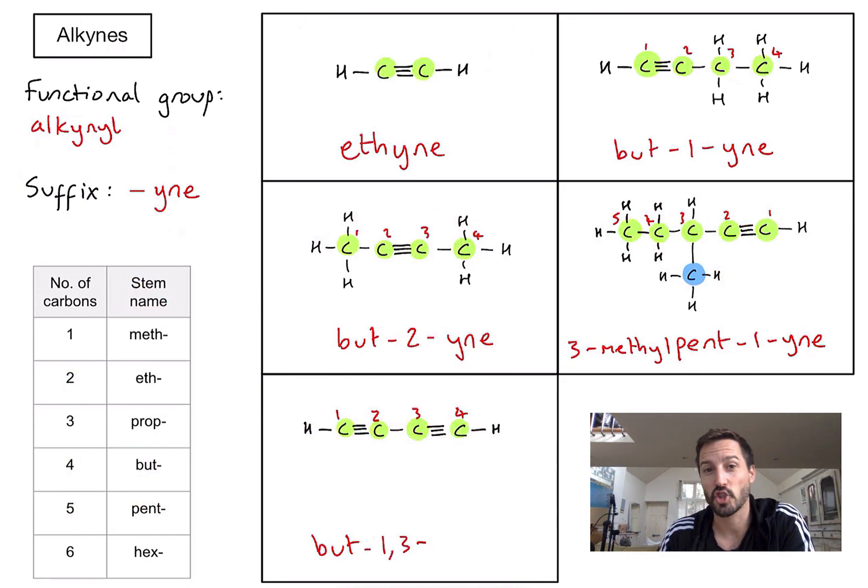And because there are two of that functional group, before putting yne, I need to write di. So the full name bute-1,3-diyne, which gives me all the information I could possibly need to be able to draw that molecule from the name.